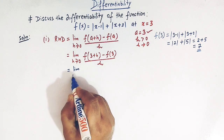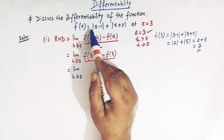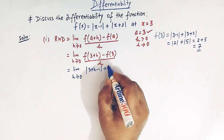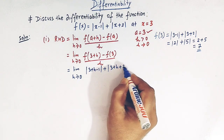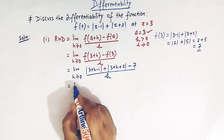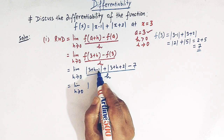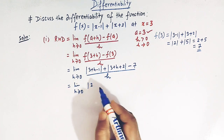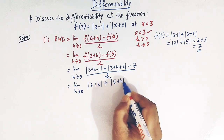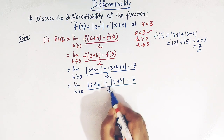Now we write: limit h tends to 0 of [f(3 + h) - f(3)] / h. Substituting x = 3 + h in the function gives f(3 + h) = |3 + h - 1| + |3 + h + 2|, and f(3) = 7. Simplifying inside the mod symbols: 3 + h - 1 = 2 + h, and 3 + h + 2 = 5 + h. So we have [|2 + h| + |5 + h| - 7] / h.